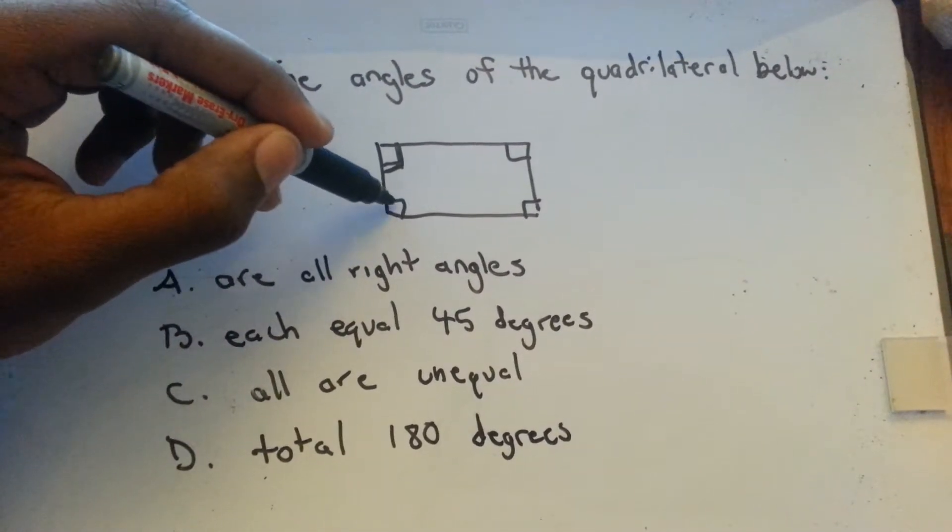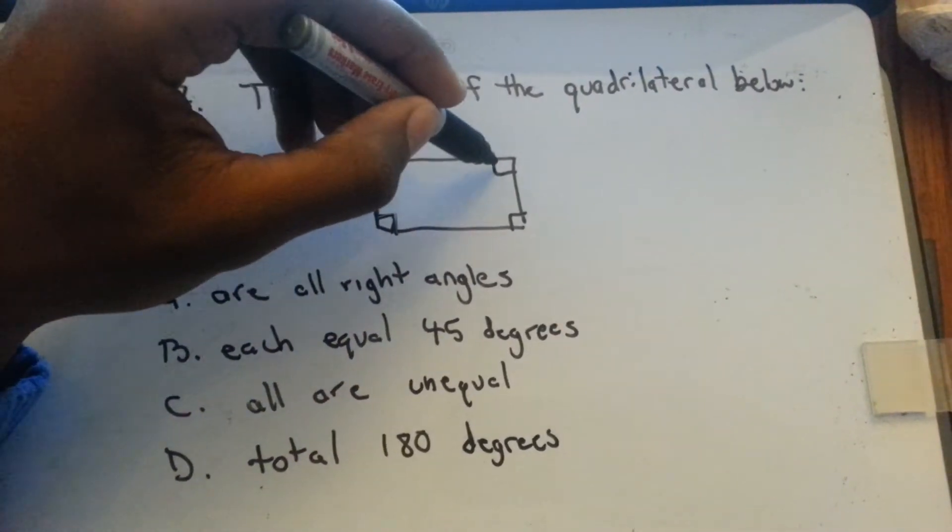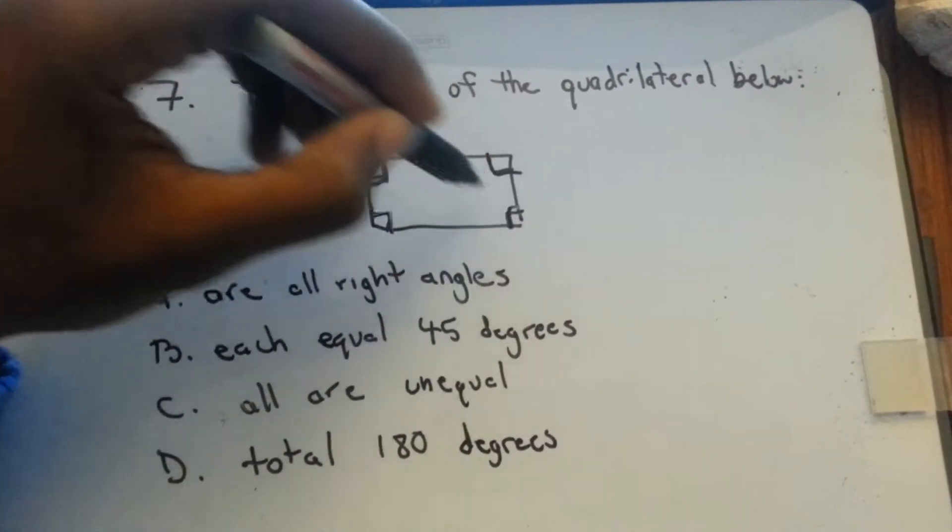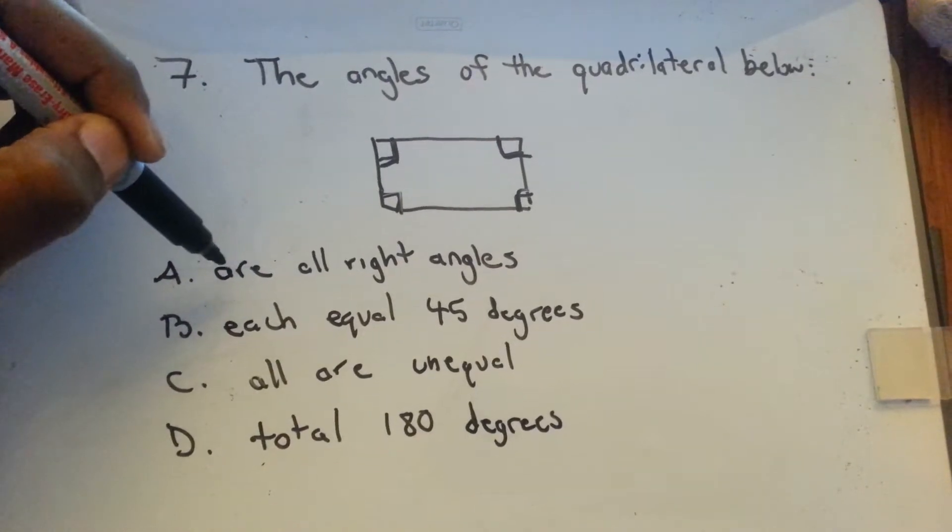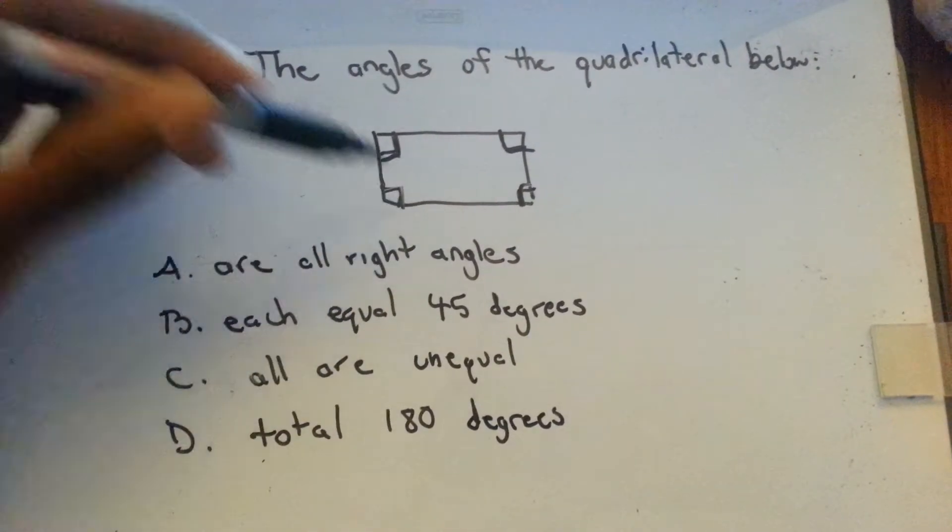So with this figure, all the corners have that box. So that means A, all the angles are right angles.